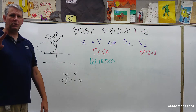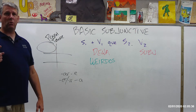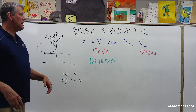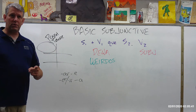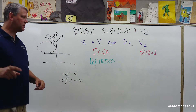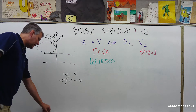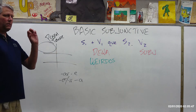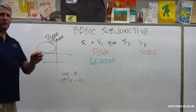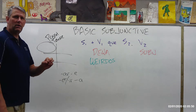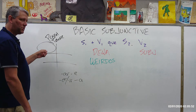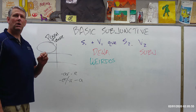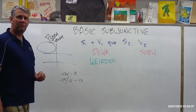I'm going to go over two things: how to form the subjunctive — how to write it out, how to spell it, how to say it — and then when it's used. The first thing: how do we spell it? In order to form the subjunctive mood, the first thing you're going to do is take the present tense yo form of the verb, whatever verb it is that you want to put into the subjunctive.